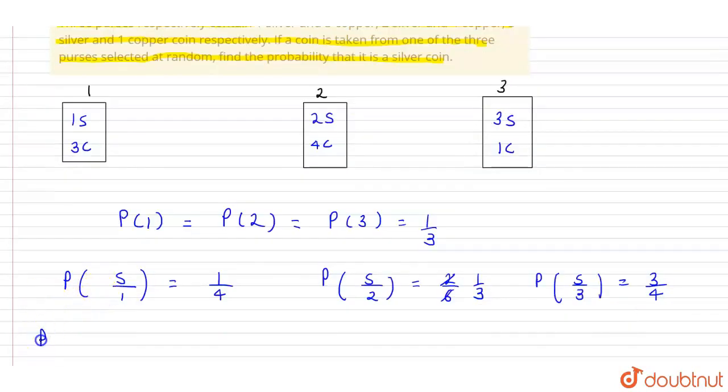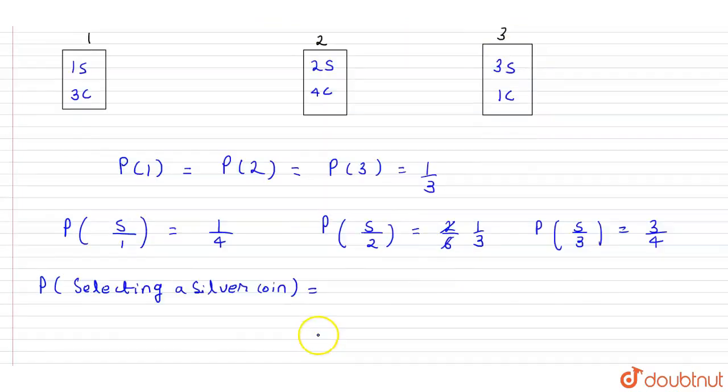Now, the probability of selecting a silver coin will be: P(1) times P(S|1), plus P(2) times P(S|2), plus P(3) times P(S|3).